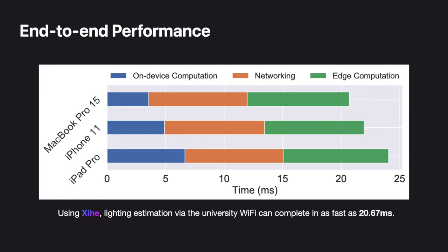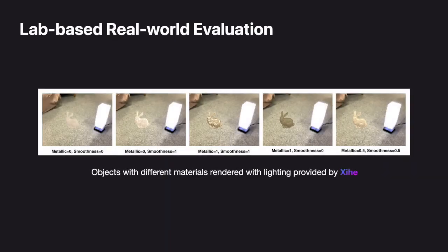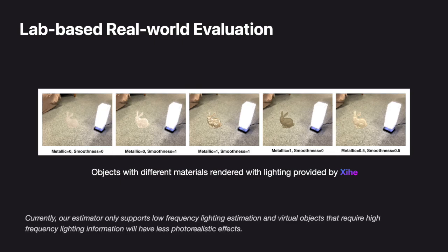Performance-wise, using XIHE, lighting estimation via the university Wi-Fi can complete in as fast as approximately 21 milliseconds. We also conducted a lab-based evaluation using a controllable external light source, testing the triggering strategy effectiveness and producing multiple rendering results with different object material settings. Note that XIHE lighting estimation is bounded by the supported lighting estimator; currently our estimator only supports low-frequency lighting estimation, and virtual objects that require high-frequency lighting estimation will have less photorealistic effects.